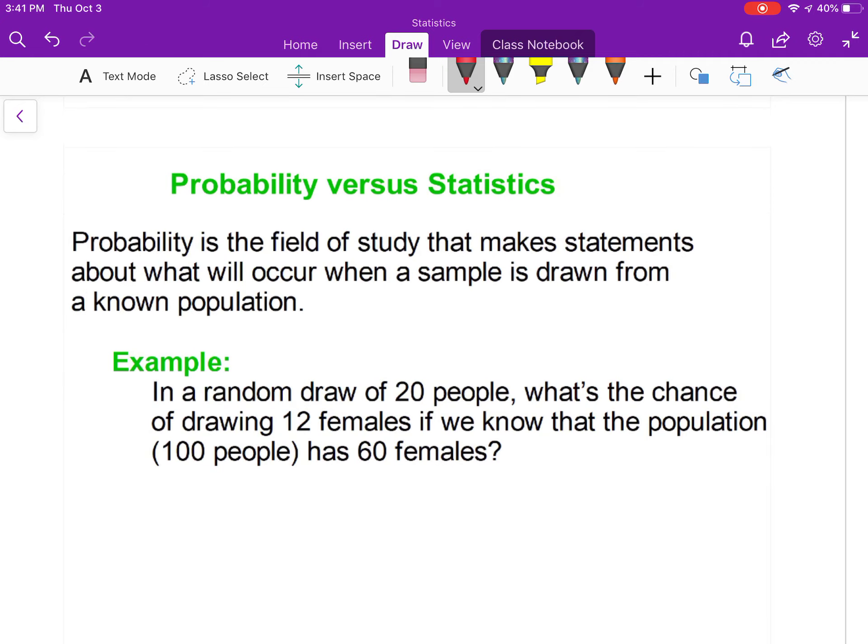Probability versus statistics: probability is the field of study that makes statements about what will occur when a sample is drawn from a known population. For example, in a random draw of 20 people, what is the chance of drawing 12 females if we know that the population of 100 people has 60 females?